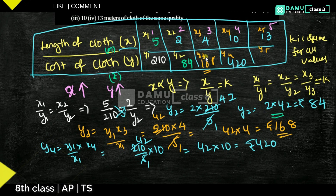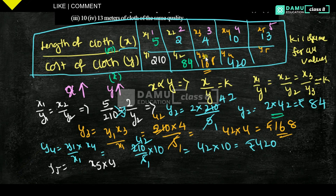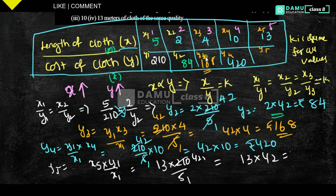For the last value, Y5: using X5 into 210 by 5, with X5 = 13, we get 13 into 42. That gives 546 rupees. The cost of 13 meters of cloth is 546 rupees. No need to write X1, X2 labels each time — that was just for understanding. Thanks for watching, please subscribe.